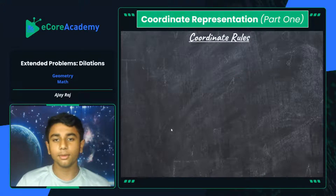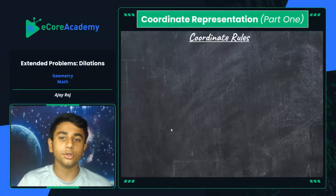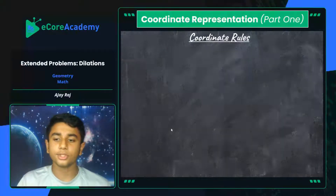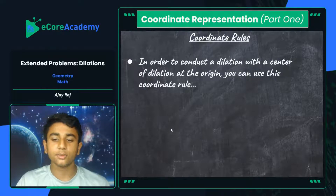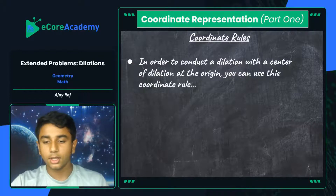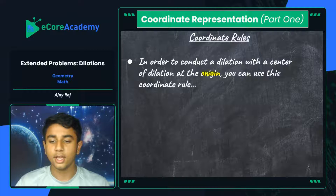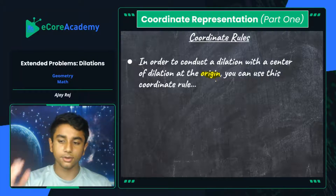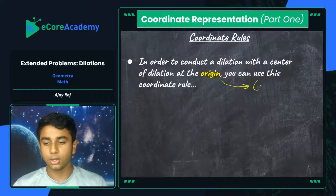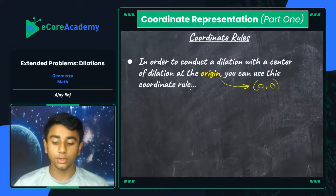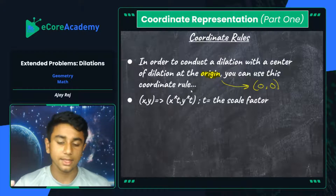We're going to look at coordinate representation part one, which is all about coordinate rules. Coordinate rules are specific shortcuts you can use through relations with coordinates. These are not always accurate for all kinds of dilations — only for specific types. In order to use this coordinate rule, the center of dilation must be at the origin, the point (0, 0) on the coordinate plane. Only if the center of dilation is at the origin can you use this rule.